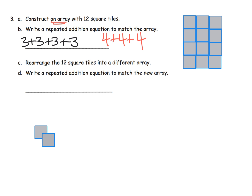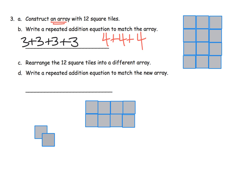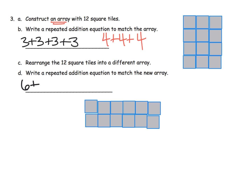Now it says to rearrange the same 12 tiles into a different array. So I'm going to take another 12 tiles and build another array. This time I'm going to have columns of two. I still have 12 tiles because I have six on the top row and six on the bottom row — six plus six is 12. So there's our repeated addition by looking at the rows: two rows of six, that's six plus six. Or I can look at the columns — in each column there's two tiles, so I could think of this as two plus two plus two plus two plus two plus two.